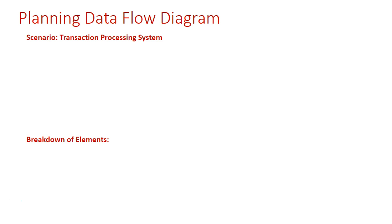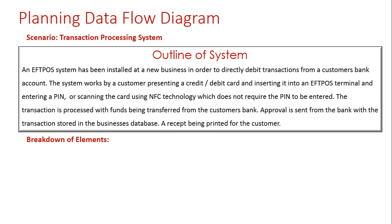We're going to look at a scenario related to transaction processing systems, specifically focusing on EFTPOS. An EFTPOS system has been installed in a new business to directly debit transactions from a customer bank account. The system works by a customer presenting either a credit or debit card, inserting it into the EFTPOS terminal and entering a PIN, or scanning the card using NFC technology which does not require a PIN. The transaction is processed with funds being transferred from the customer's bank account, approval is sent from the bank, and the transaction is stored in the business database. A receipt is printed for the customer.